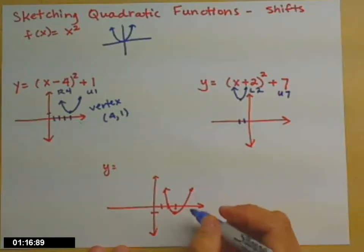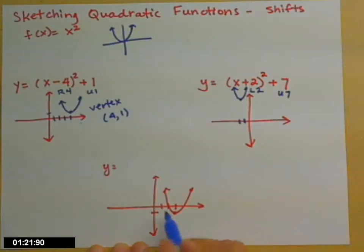On this last example, what I've done is I've drawn the parabola, and you need to come up with the function. So notice where it's moved. Here's my vertex, and it's been moved 3 to the right and 1 down.